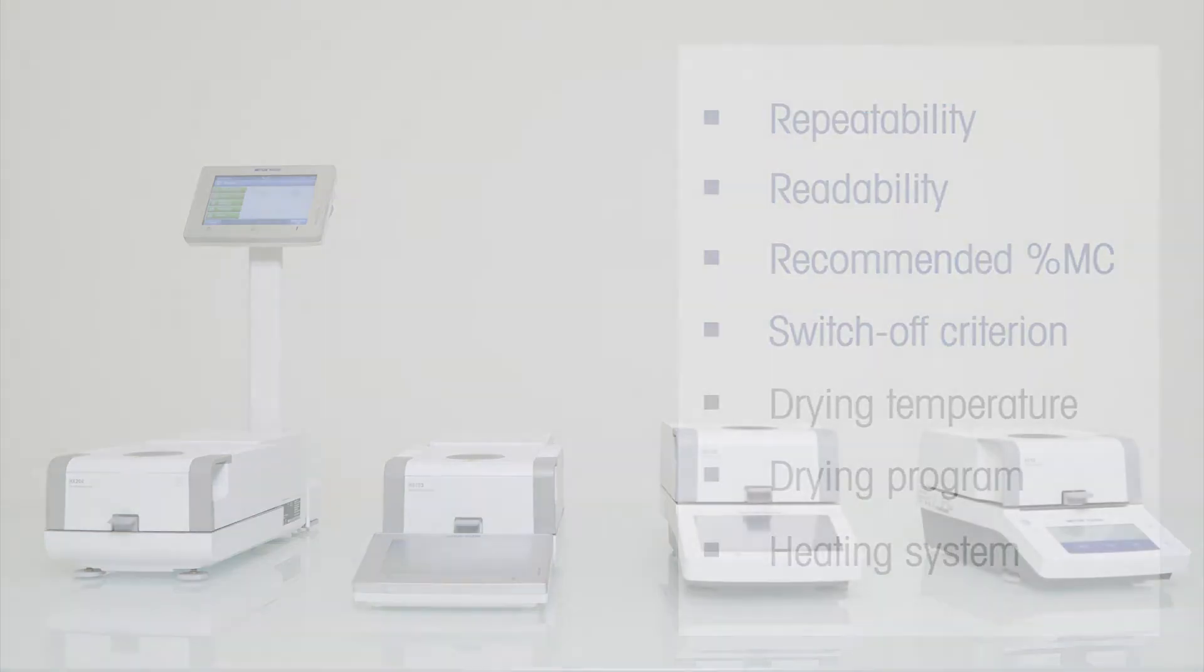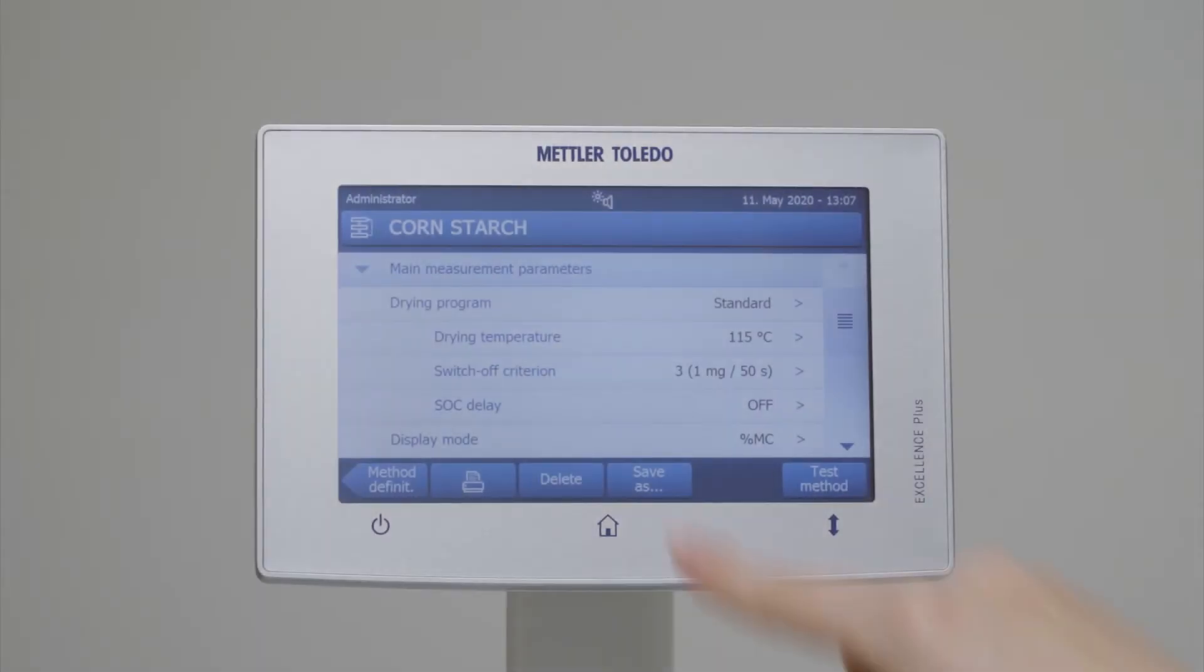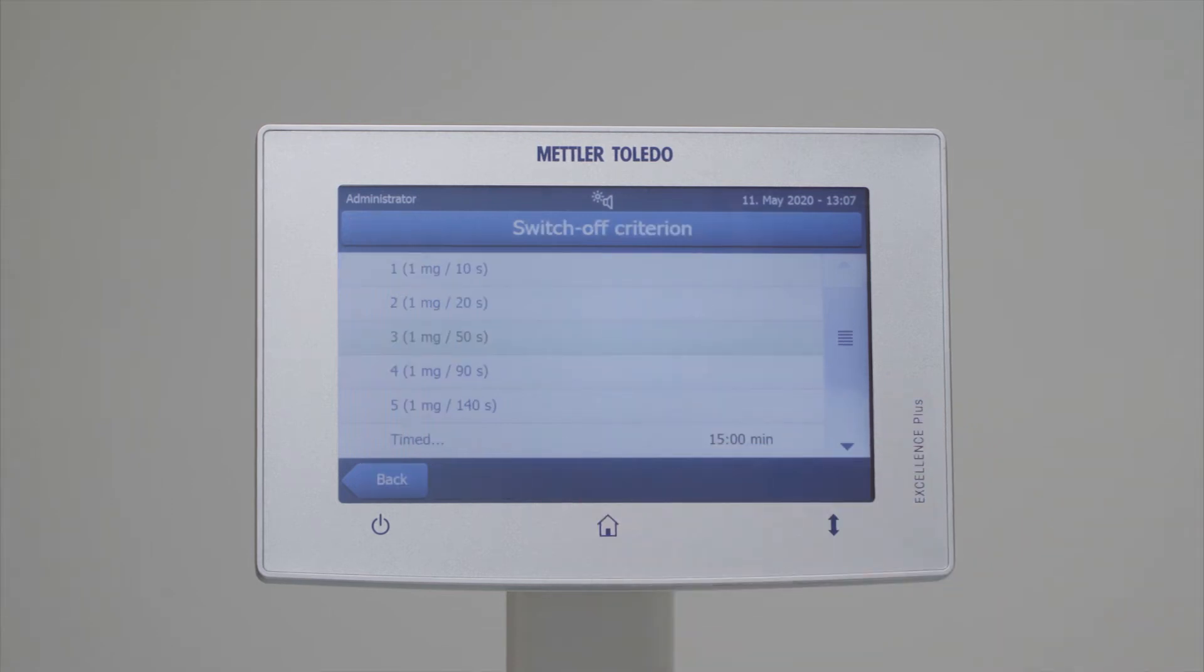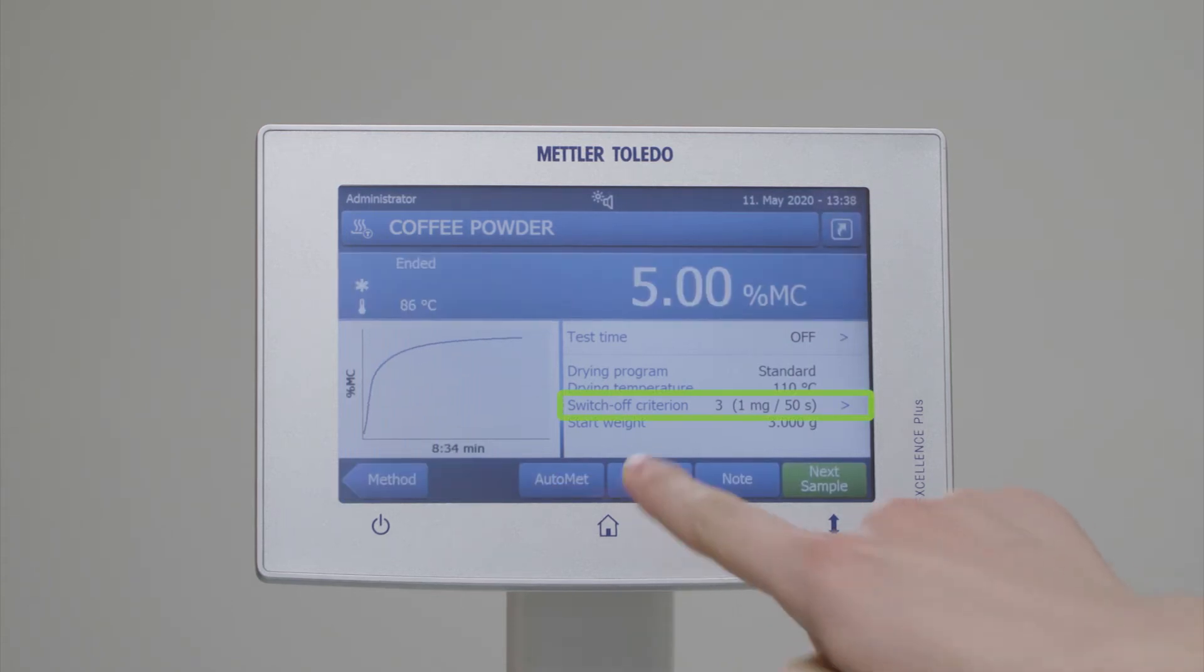The switch-off criterion defines when the measurement ends. There are mainly two options to switch off the measurement. Either you can end the measurement after a certain time, or you consider the weight loss per time. For example, you could stop the measurement when the average weight loss is less than 1mg over the past 50 seconds.